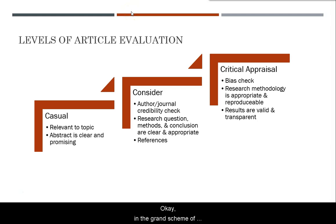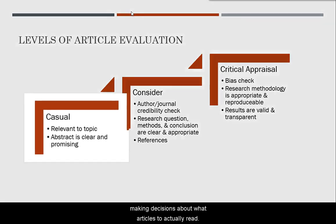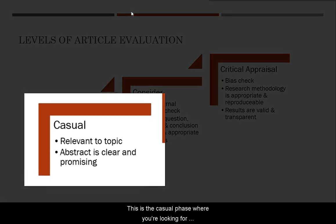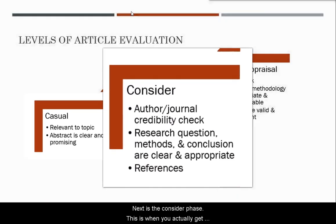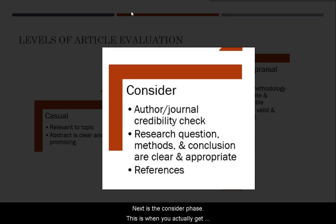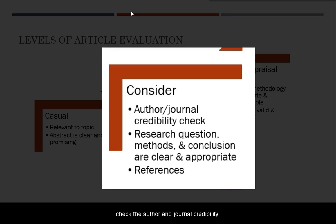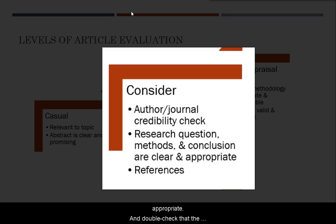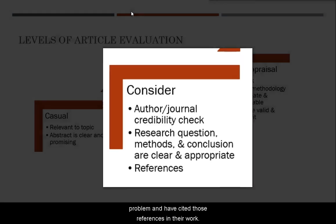In the grand scheme of things, there are levels to evaluating an article, starting with when you first run your search and make decisions about what articles to actually read. This is the casual phase, where you're looking for relevancy to your topic and ensuring the abstract is clear and promising. Next is the consider phase, when you get to the full text and decide if it's something you would actually use. Here you should check the author and journal's credibility, make sure the research question, methods, and conclusion are clear and appropriate, and verify that the author has evaluated the relevant literature and cited those references in their work.